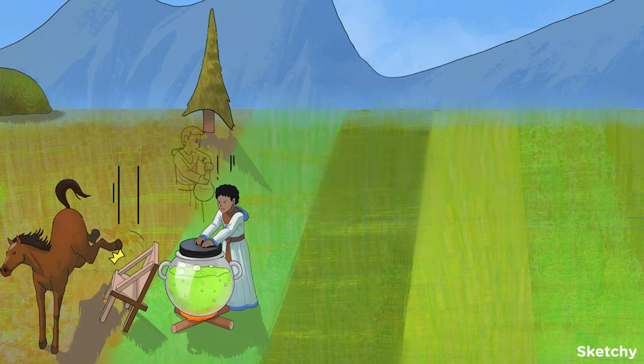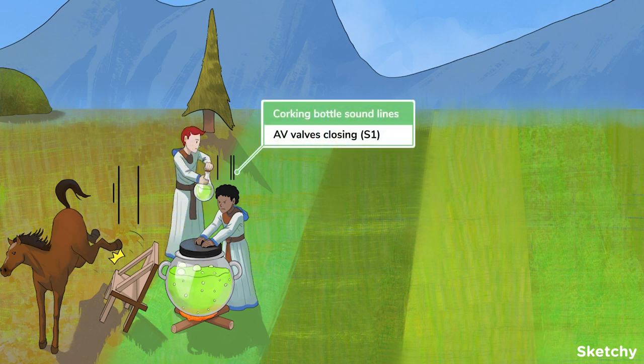This is possible because as the ventricles contract, the rising ventricular pressure will force the AV valves, the mitral and tricuspid, closed, which produces the first heart sound, S1. The heart sound-like lines coming from this corked bottle should help you remember this.